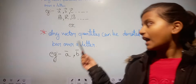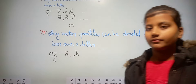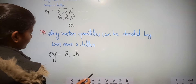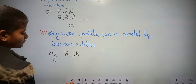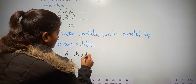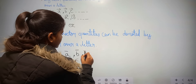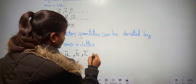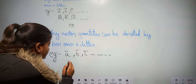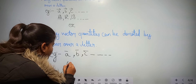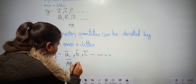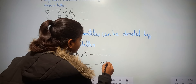Vector quantity can be denoted by a bar over a letter, and also with the help of an arrow. For example, C with a bar over it, and many more, et cetera.